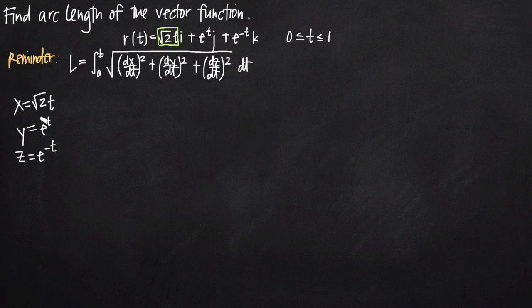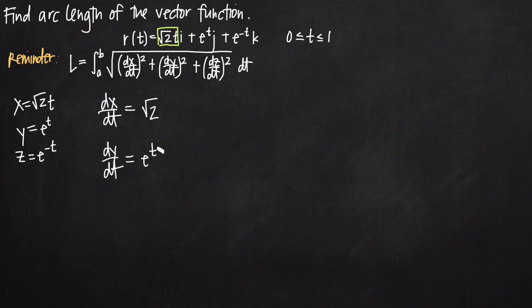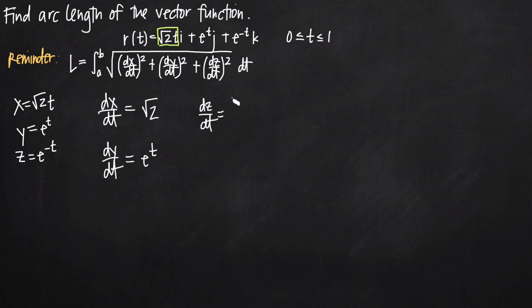dx over dt is the derivative of x with respect to t. The derivative of the square root of 2 times t is just the square root of 2 — the t drops away. dy over dt equals e to the t, which just stays the same. And dz over dt: we bring the negative 1 coefficient down in front of the e, giving us negative e to the negative t.